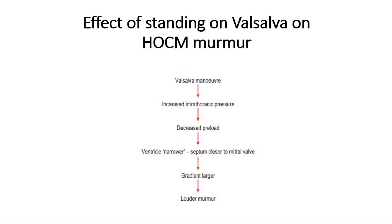Lastly, we look at the effect of standing or Valsalva on the HOCM murmur. When doing the Valsalva maneuver, there is increased intrathoracic pressure and reduced preload, so the ventricle becomes narrower and the septum is closer to the mitral valve. The gradient becomes larger, causing a louder murmur to be heard.